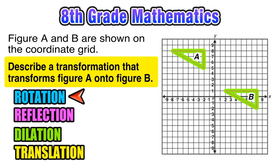If we look at our two figures, we can see that this is not a rotation. A rotation is a turn around a fixed point, but our figures A and B both have the same orientation, haven't been rotated at all.